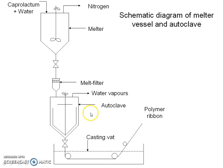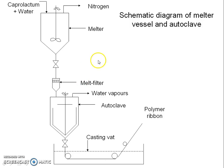In the autoclave, vacuum is applied to further remove water from the system to speed up the process of building up of molecular weight. The process reaches equilibrium at around 85 to 95 percent conversion in stage 2 of the polymerization. This is the maximum conversion percentage and the polymerization does not complete. The unreacted caprolactam is removed by flashing and recycling for production of nylon.